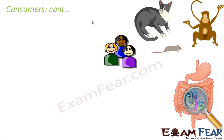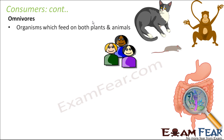The third type of consumer is omnivores — those which eat both plants and other animals. It is like a mix of herbivore and carnivore. The best example is human beings. Other examples include cat, rat, and monkey. They eat plants and they also eat other animals.